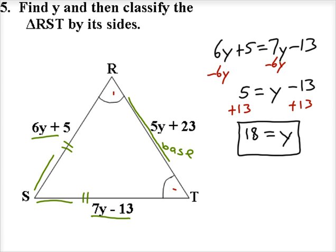Now if y is equal to 18 and it says we're to classify this triangle by its sides, well we know for a fact that it's an isosceles triangle because these base angles were congruent. However, it's possible—remember an isosceles triangle could potentially be an equilateral triangle if all three sides are congruent. So let's take this value of 18 for y and substitute that value in for each of these three side lengths.